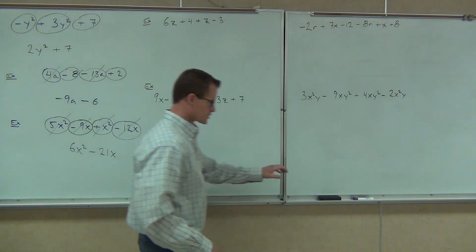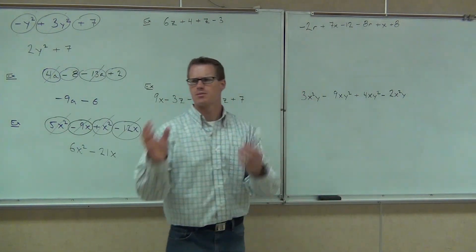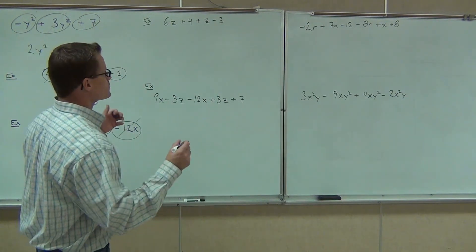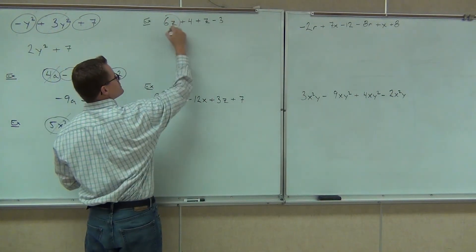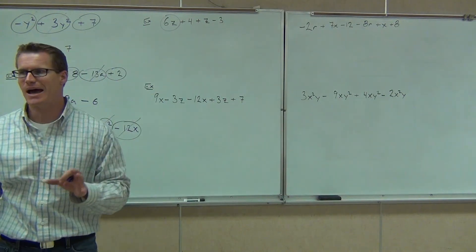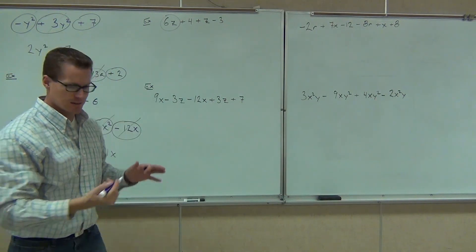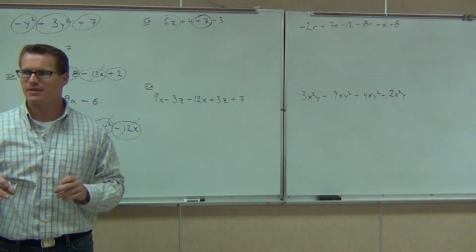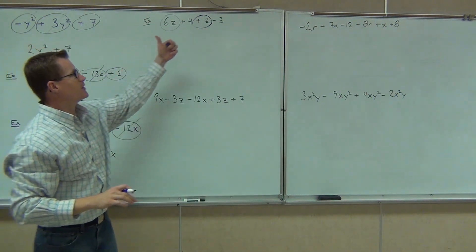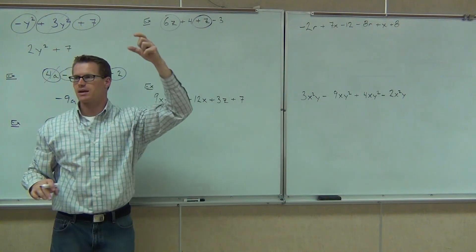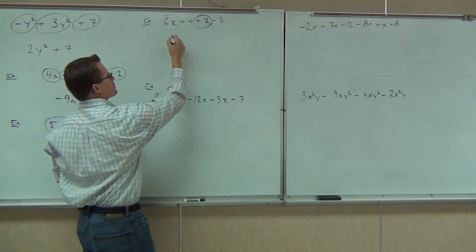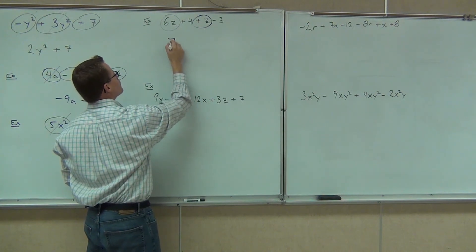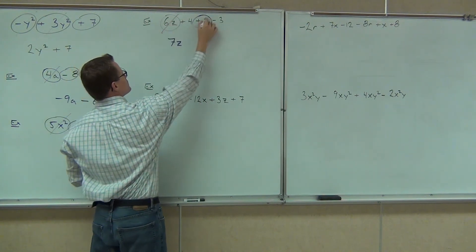Okay, let's see what happens on these problems. We're looking for like terms. We can count the number of terms, we can see coefficients, and now we should be really getting proficient at like terms. So on this problem, what I'm looking at is a 6z, and I'm looking for any other z's that I have. Do I have any other z's? Yeah. So when I combine them, I have a 6z and I have a 1z — how many z's do I get? 7z. Good. When I combine those like terms, I get 7z, and I'm going to cross those out.